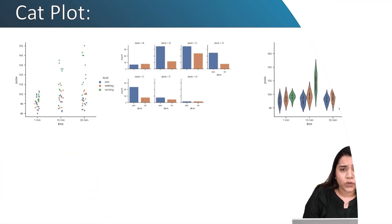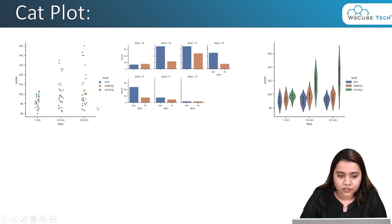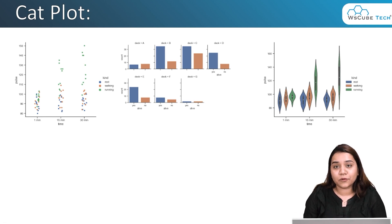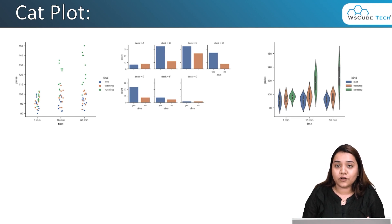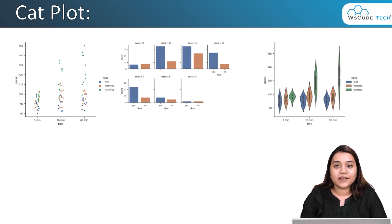Let's have a look at how this cat plot looks like. If you are wondering it looks like a cat, then no it does not look like a cat. What we're seeing is something like a strip or scatter plot, a bar plot, and a violin plot. So which one is cat plot? The answer is they all three are cat plot. Cat plot means categorical plot — you can create any kind of plot with the help of cat plot using a function called 'kind'.